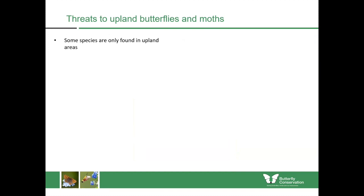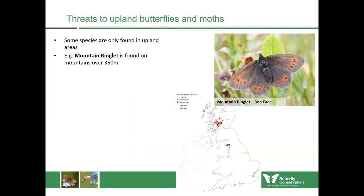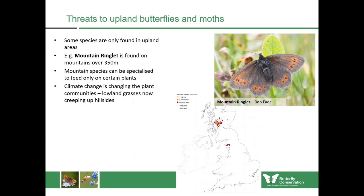Some upland butterflies and moths are experiencing significant threats. The mountain ringlet is only found in mountains over 350 metres in elevation, with most of its distribution in the Scottish Highlands. It mostly feeds upon nardus grass and other fine-leaved grasses found in upland areas. However, climate change is changing plant communities — lowland grasses are creeping up hillsides, potentially pushing mountain ringlets further and further up until there's nowhere else to go. These species are at risk from climate change altering the plant communities they depend upon.